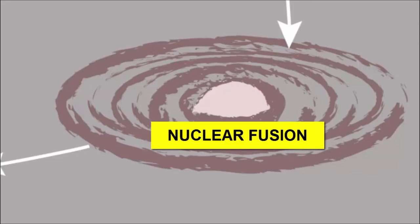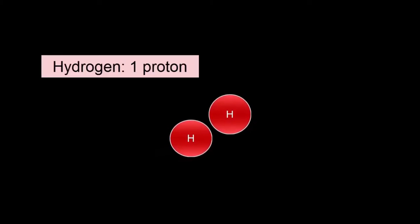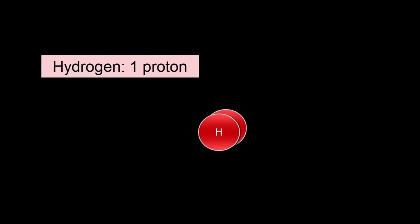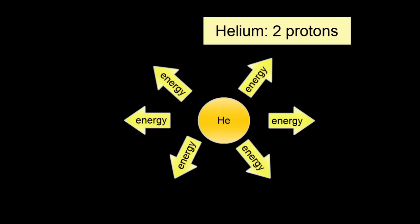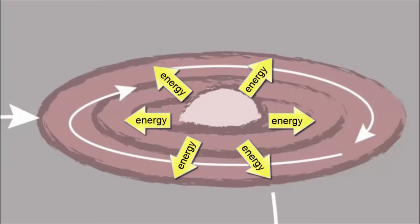Nuclear fusion is a process by which atomic nuclei fuse together to create new atoms. For example, when one hydrogen, one proton in the nucleus, fuses with another hydrogen, one proton in the nucleus, we get helium, two protons in the nucleus. During the fusion process, energy is released and shines outward from the center or core of this ball of gas. These giant balls of shining gas are called stars.